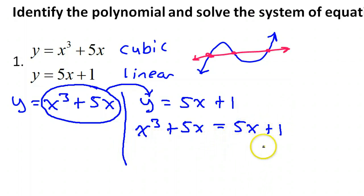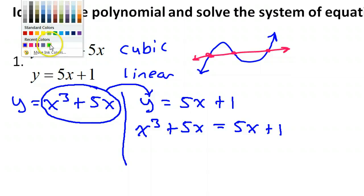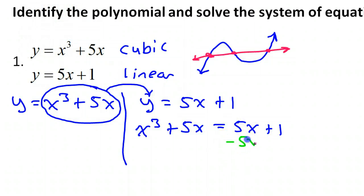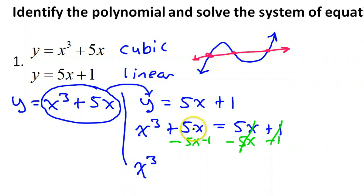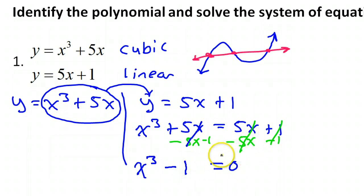Now if I want to solve this, it would be helpful to get zero on one side. So let's subtract 5x from both sides and subtract 1 from both sides. The 5x and the negative 5x cancel each other out. That leaves me with x to the third power, and the negative 1 is still there, so I'll have x to the third power minus 1 equals zero.